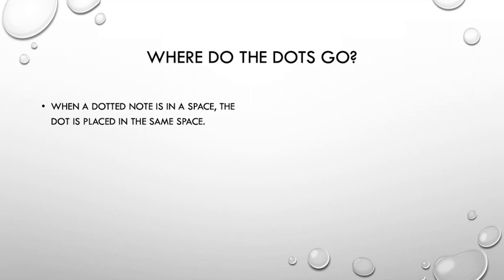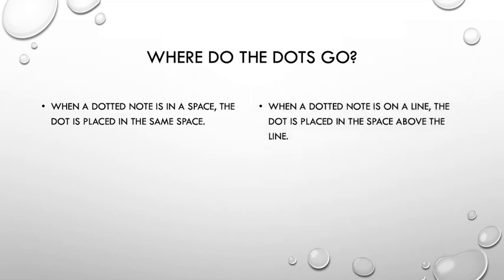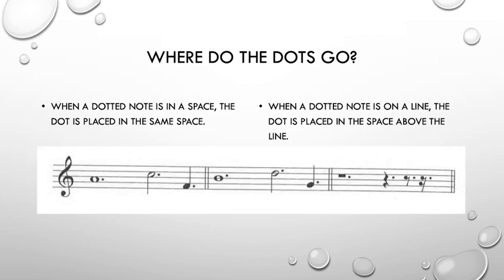For a note in a space, the dot goes in the same space. For a note on a line, the dot goes in the space above. For a rest, the dot goes in the third space of the staff. So, here we see space notes and the dots are all in the same space as the note. On the line notes, the dots are all in the space above the note. And with rests, the dots are always in the third space as we see.